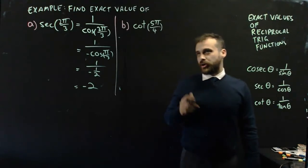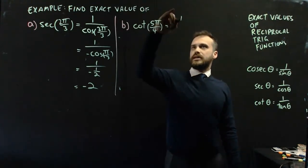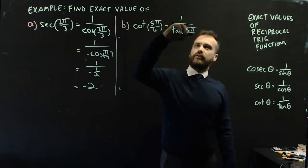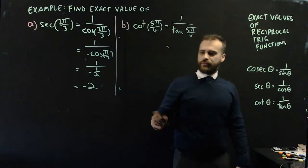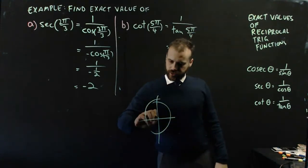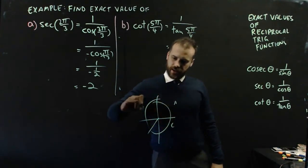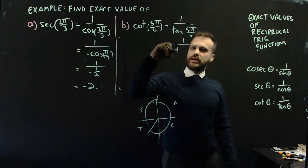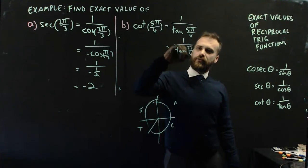So, what about cot 5π/4? Well, that's going to be the same as 1/tan 5π/4. If I draw my little standard triangle here, it's going to be down here. CAST - it's going to be positive.